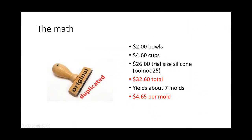Here's the math. If you buy the bowls for $2, the 40 pack of cups for $4.60, and the trial size Oomoo 25 for $26, you have a grand total of $32.60, which is quite affordable for somebody who doesn't duplicate much. It yields about seven molds, which equates to about $4.64-65 per mold. Obviously if you buy the gallon and more cups, it'll drive the price down to around $1.50, but for those who don't want to buy a massive amount, this is just an ideal way of doing it.